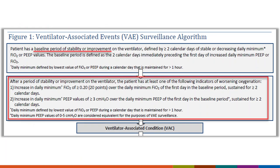Here we have a screenshot of the first tier of the algorithm. To identify a VAC, you must first identify a baseline period of stability or improvement on the ventilator in either the FIO2 or the PEEP parameter, followed by a period of worsening oxygenation in the same parameter. Before we can do this, we must identify the daily minimum FIO2 and the daily minimum PEEP for each day the patient is receiving mechanical ventilation, then assess those daily minimum values for a baseline period followed by evidence of worsening oxygenation.